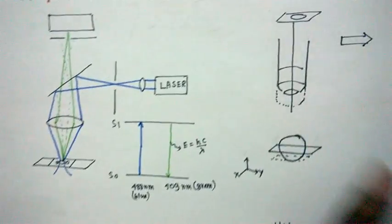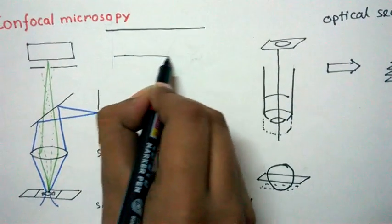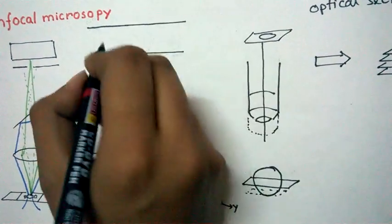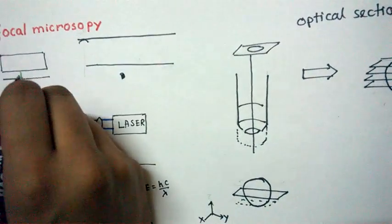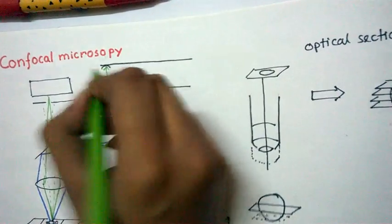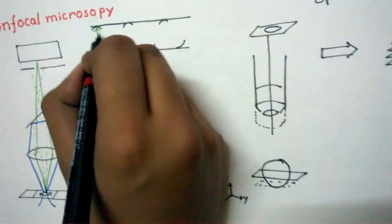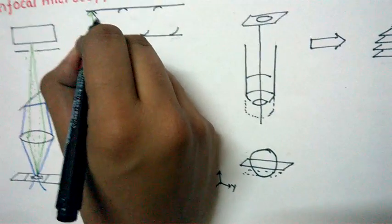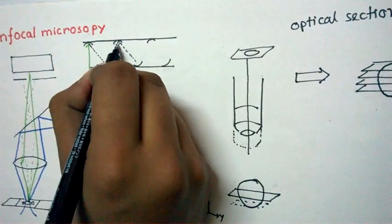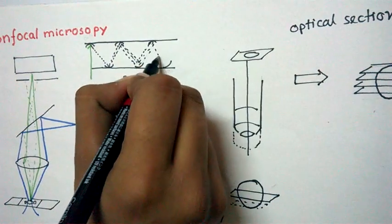Now let's look at the detector of the confocal. In the detector section of the confocal microscope we have something called a dynode arrangement — it is essentially a photocathode. This light hits the detector photocathode, and we have a series of such cathodes arranged so that when light hits, the photoelectric effect occurs and each time the effect gets multiplied.